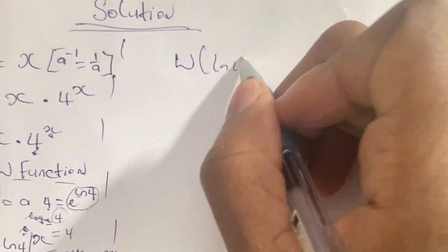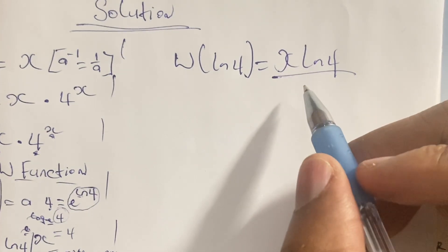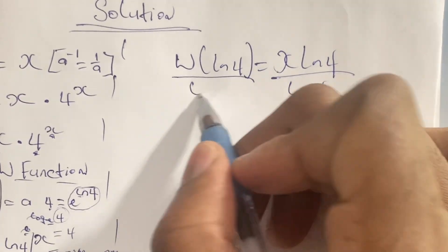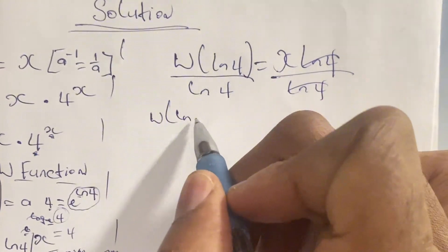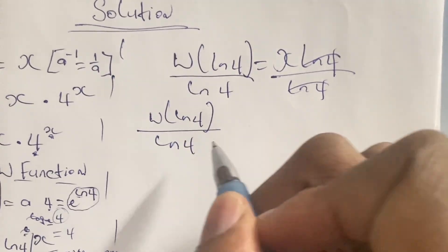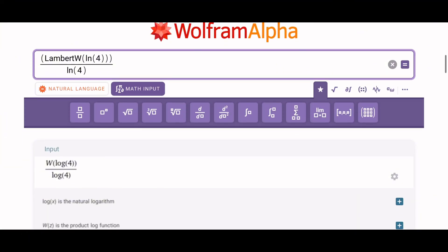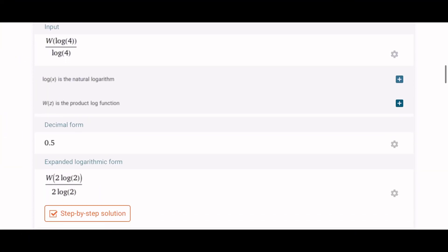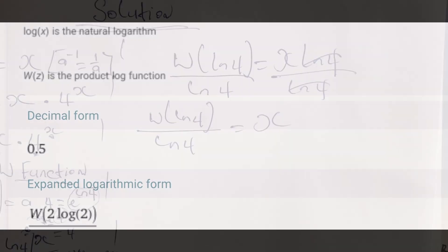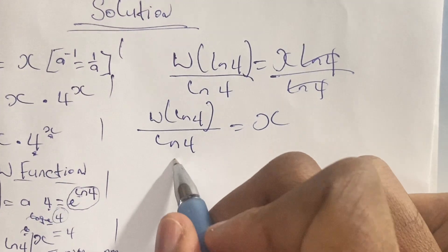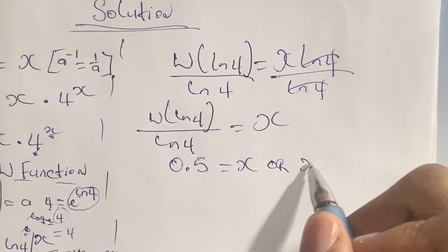We have W of ln 4 is equal to x·ln 4. From here we solve for x by dividing both sides by ln 4. So W of ln 4 over ln 4 on the left, and the ln 4s cancel on the right, leaving us with x. So x is equal to W of ln 4 over ln 4. If we plug this into Wolfram Alpha, we can see the decimal form of this result, which is 0.5. So x is equal to 0.5, or we could say x is equal to one half.